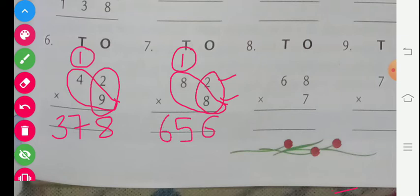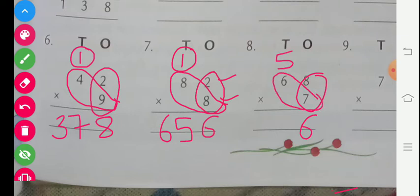Question number 8: 68 multiplied by 7. 7 eights are 56, carry 5. 7 sixes are 42, plus 5 carry is 47. The answer is 476.